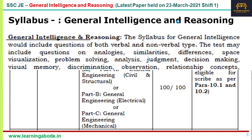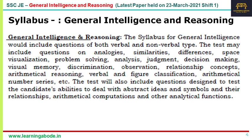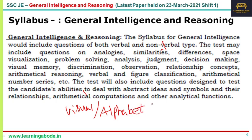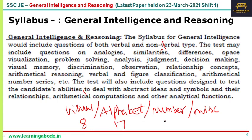Among the 50 questions of this particular paper, I will be solving 25 questions. Looking at the syllabus, all 50 questions can be categorized into four types: visual-based questions, questions based on alphabet sequence, number series or number-based logical questions, and miscellaneous — like blood relationship, direction sense, seating arrangement, etc. In this particular paper, there are about 8 visual questions, 17 alphabet-related, 14 number-related, and 11 miscellaneous questions.